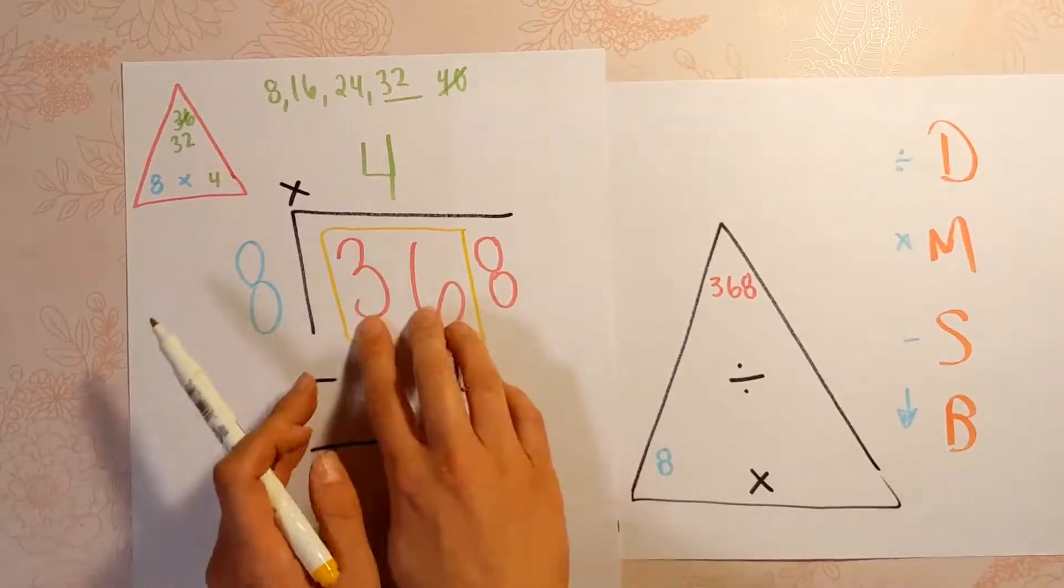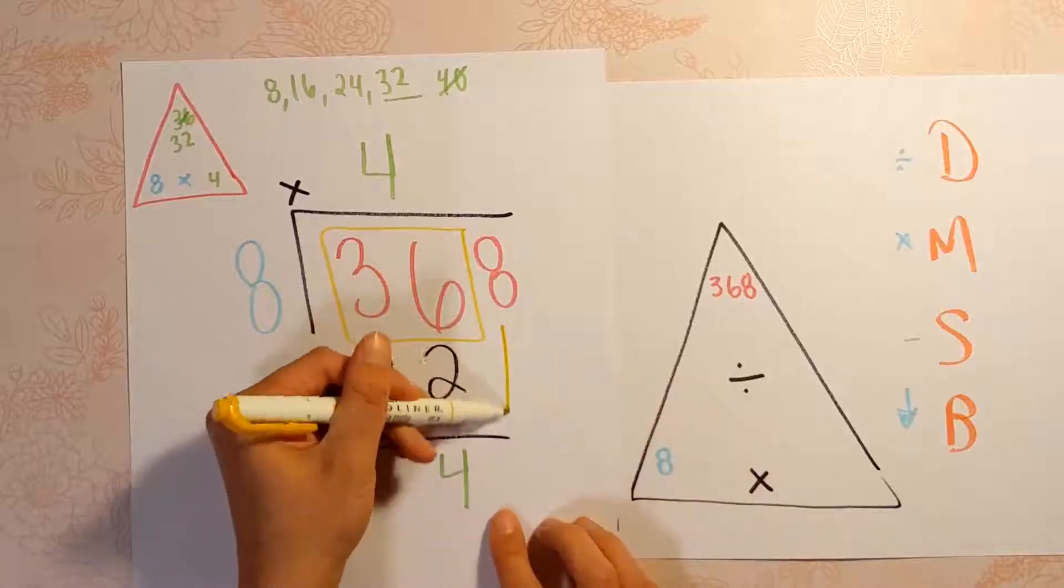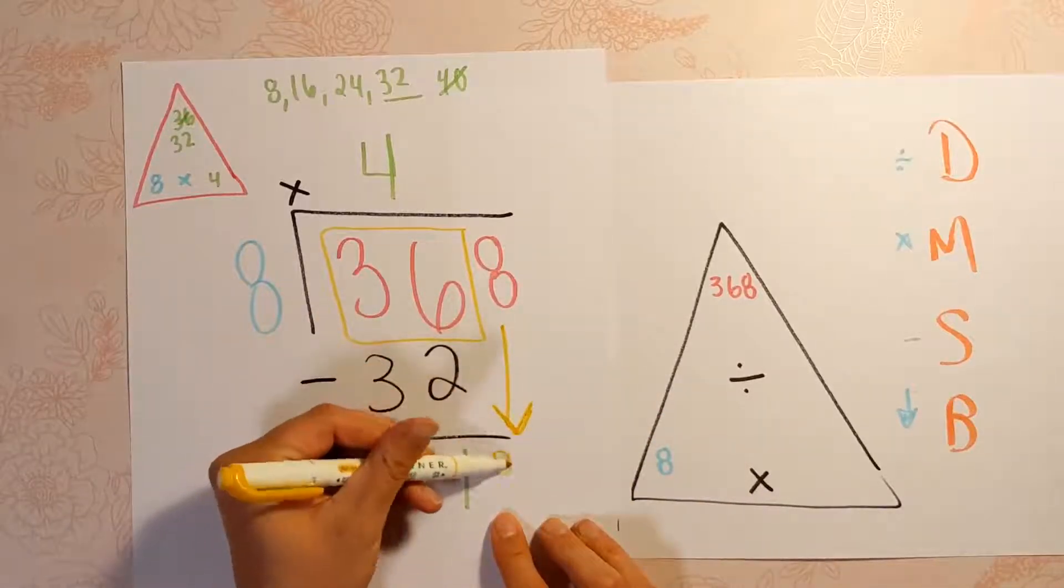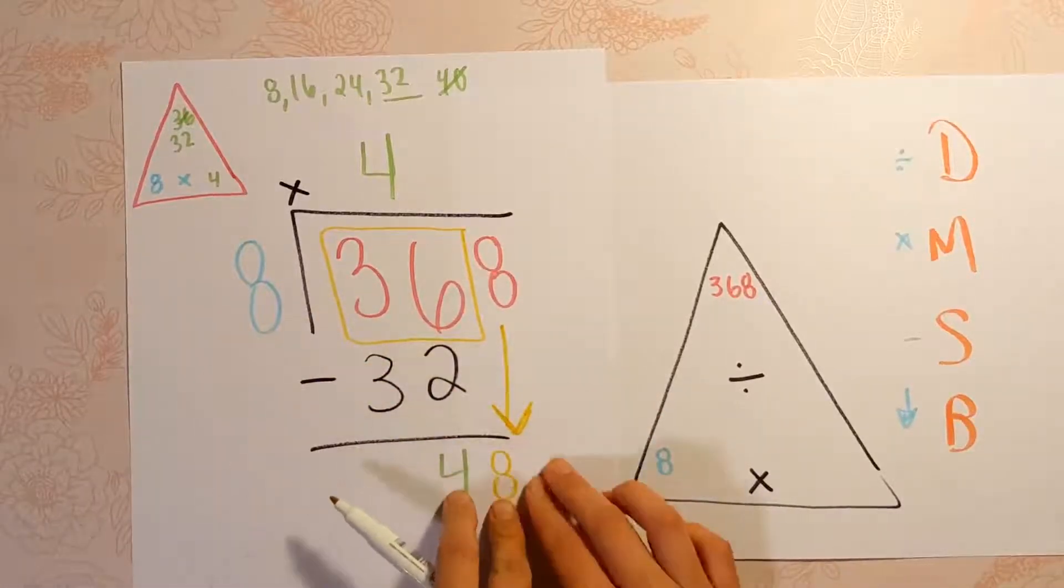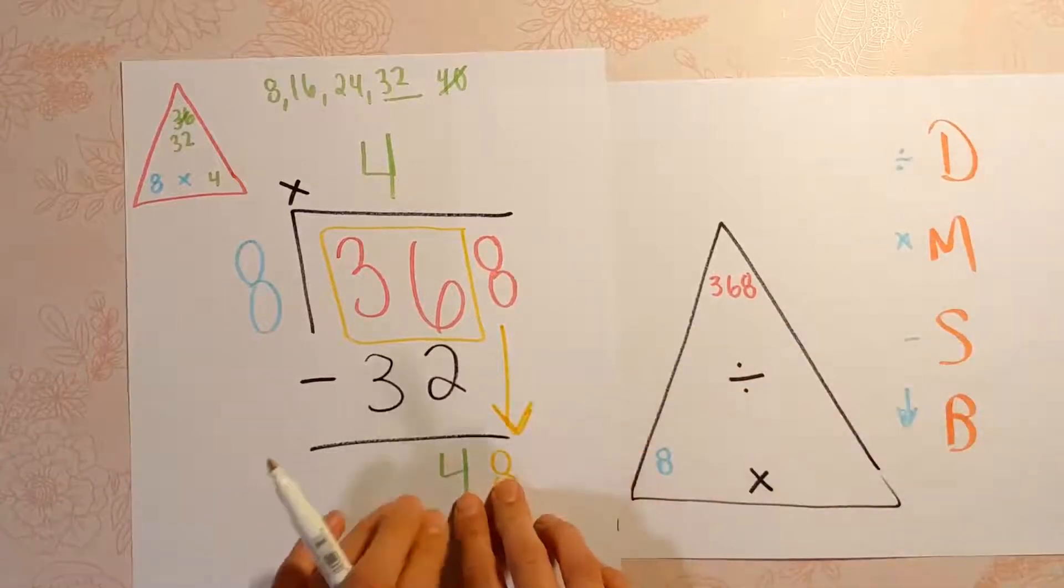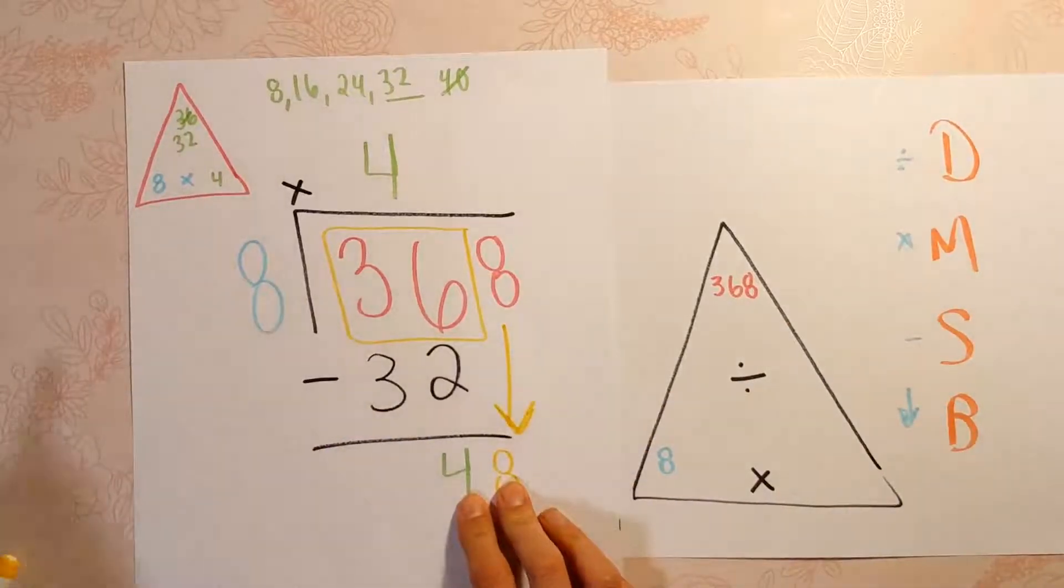What are we bringing down? Well, you already used these. So now you're going to bring down the 8. Now, using the last thing we touched, we're going to do the next step, which is divide. So now we'll do 48 divided by 8.